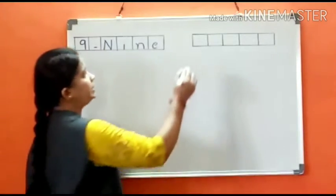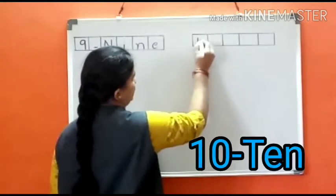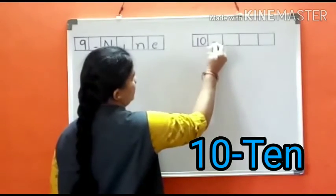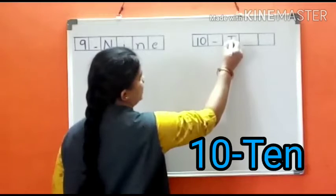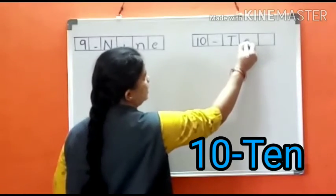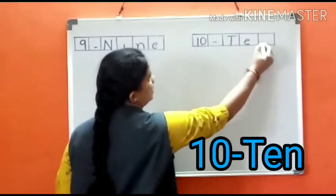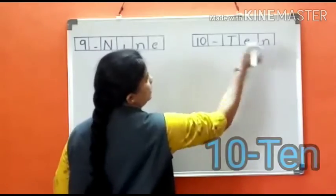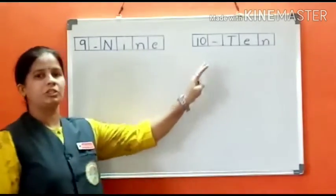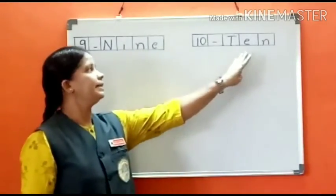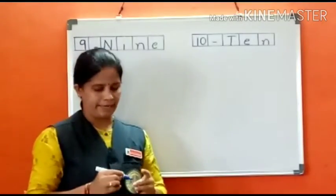9. Now we write 10 spelling. T-E-N, 10. What is the spelling of 10 children? T-E-N, 10 children.